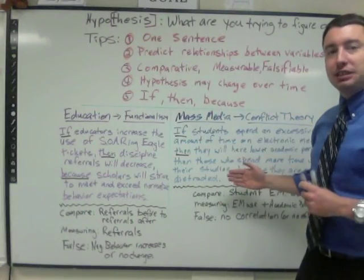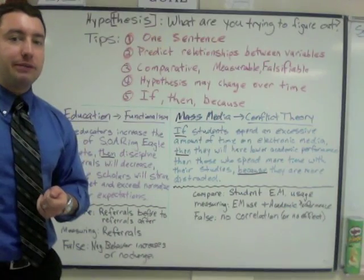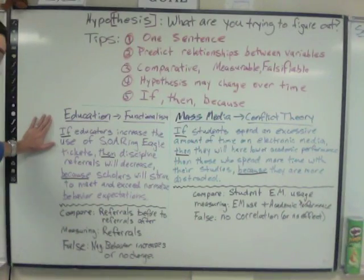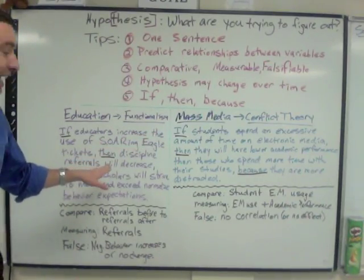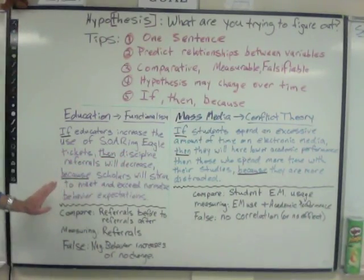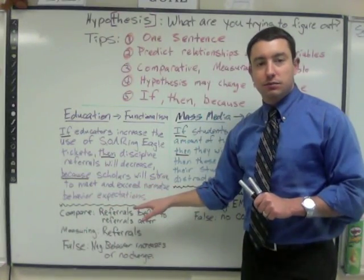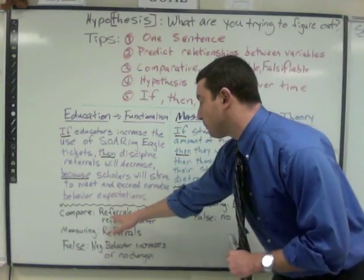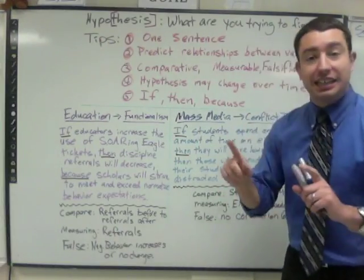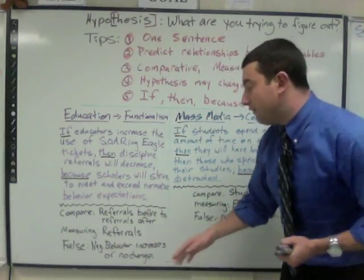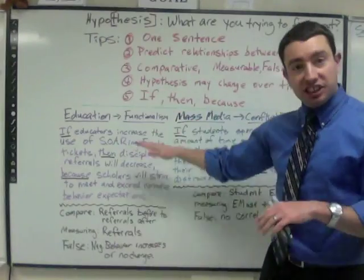Here are a couple of examples. The first one was education, from the functionalism theory. The hypothesis says: If educators increase the use of Soaring Eagle tickets, then discipline referrals will decrease because scholars will strive to meet and exceed normative behavior expectations. We're comparing referrals before the use of Soaring Eagle tickets to referrals after. You're measuring the amount of referrals, and it's falsifiable if negative behavior increases or there's no change.